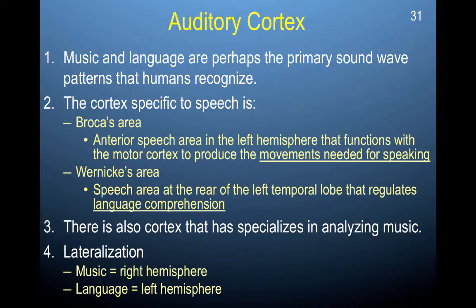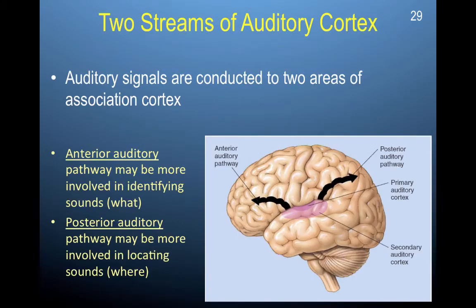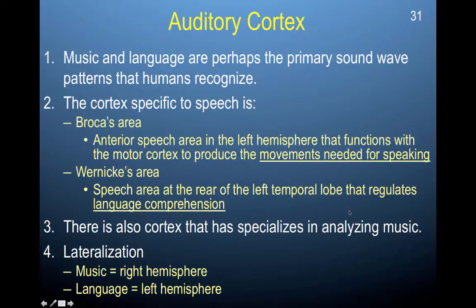Wernicke's area is the speech area at the rear of the temporal lobe that regulates language comprehension. It's in a different area of the temporal lobe, more toward the rear, and it helps with language comprehension. So if you have damage to Broca's area, you have trouble producing the sounds that align with what you want to say. If you have damage to Wernicke's area, then you have trouble understanding what people are trying to tell you.